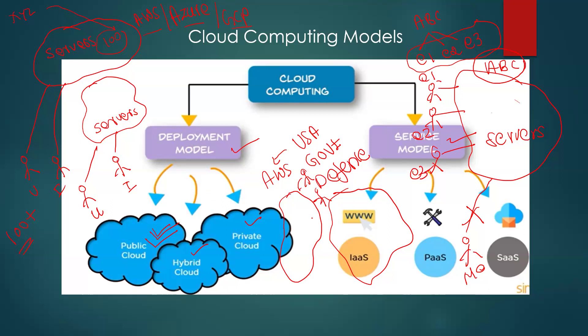AWS and Azure also provide private cloud depending on the request and budget. Private clouds are more expensive compared to public cloud because everything has to be created separately for the private cloud. Public cloud is not created exclusively for anyone — it is a general cloud. Big firms all use the AWS public cloud. Public cloud does not mean your application can be accessed by anyone — the entire setup is not dedicated to one person or organization; it is shared among multiple organizations.